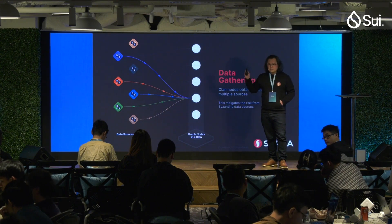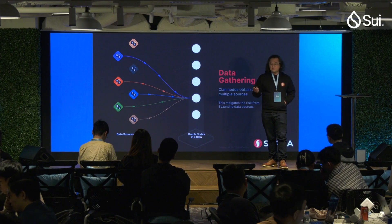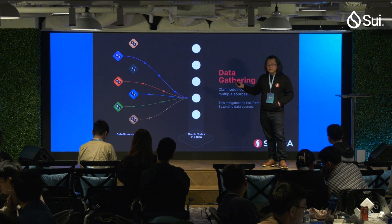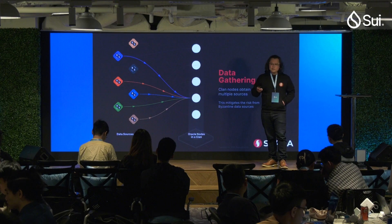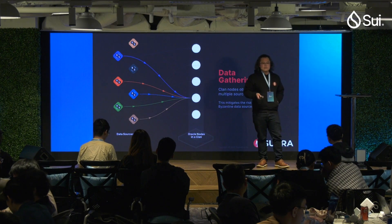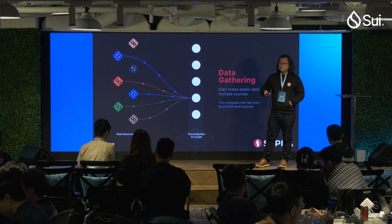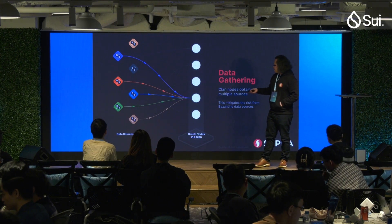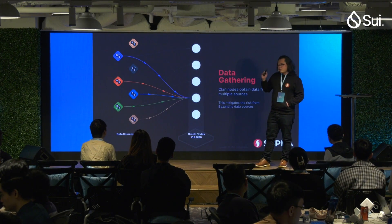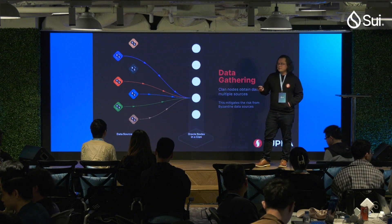Each node is also assigned a set of the available data sources, meaning every single node does not have to listen to every single data source. Supra utilizes threshold cryptography which allows us to have native randomness. This VRF is a deterministic but unpredictable assignment, so each node is actually assigned a subset of the data sources. We're trying to be as robust as possible while being very efficient and low latency.